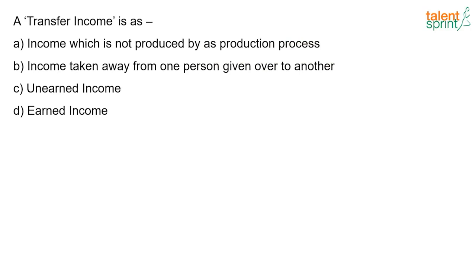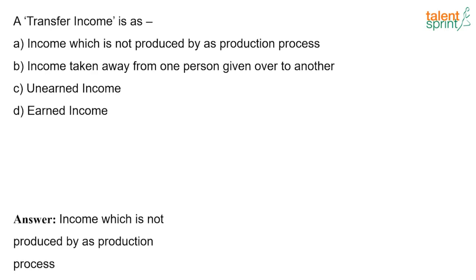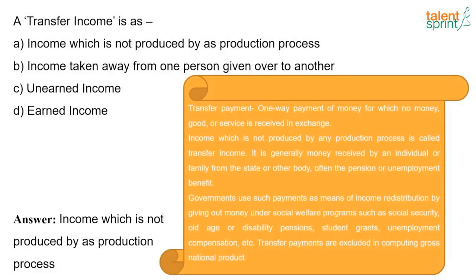Transfer income is income which is not produced by a production process. A transfer payment is a one-way payment of money for which no goods or services are received in exchange. It is generally money received by an individual or family from the state — often pensions or unemployment benefits. The government uses such payments as a means of income redistribution through social welfare programs such as social security, old-age or disability pensions, and student grants. Transfer payments are excluded when computing the Gross National Product.